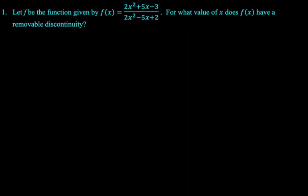Let f be the function given by f(x) equals 2x squared plus 5x minus 3 over 2x squared minus 5x plus 2. For what value of x does f(x) have a removable discontinuity? So you've got to know removable, jump, and infinite discontinuities.